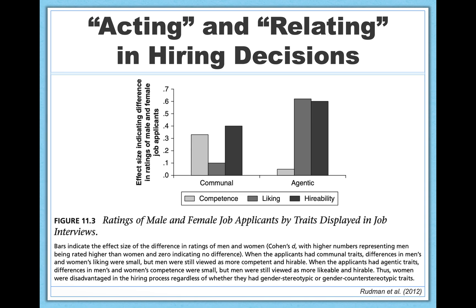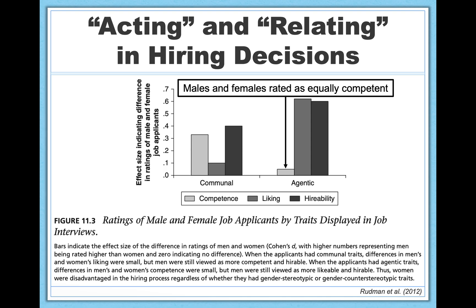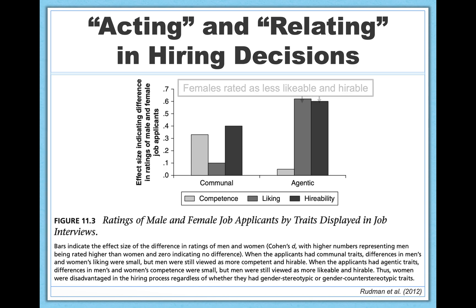Role congruity theory can also explain gender-based employment discrimination. Lori Rudman and colleagues in 2012 conducted a meta-analysis of six different experiments that all used a similar hiring paradigm — a man and a woman interviewing for a leadership position. When the applicants had communal traits, both the man and the woman were seen as equally likable, but men were rated as more competent and more hireable. When the applicants had agentic traits, women and men were rated as equally competent, but women were now seen as less likable and less hireable. So no matter what characteristics they exhibited, women were less likely to get the job.